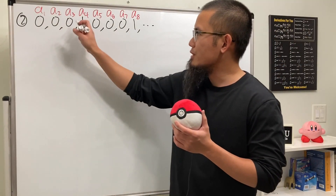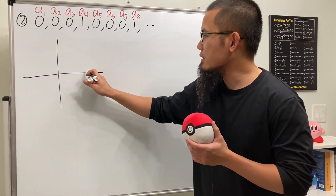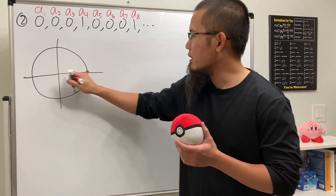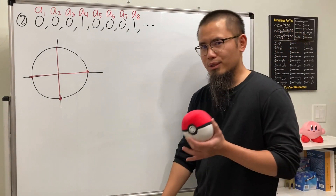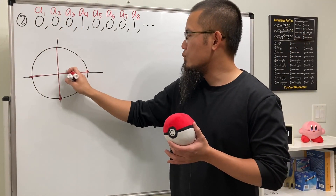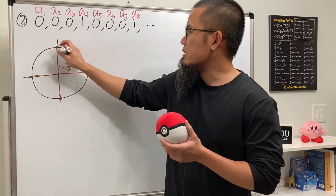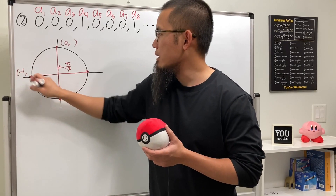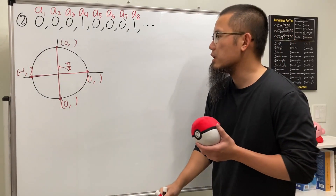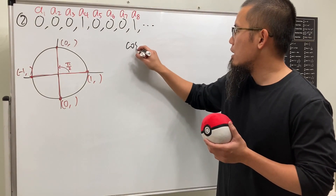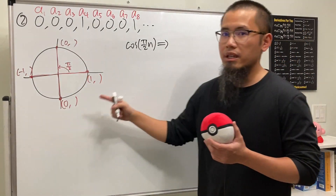For number 2, we have 0, 0, 0, 1, 0, 0, 0, 1 — this repeats every 4 times. Let's take a look at the unit circle and cut it into 4 pieces. We're looking at this point, this point, here, and also here. Since n starts with 1, the first rotation gets us here — that's 90 degrees, which is π/2. The x values are 0, negative 1, 0, and 1 respectively. If we look at cosine of (π/2)·n, this produces 0, negative 1, 0, 1, and so on.